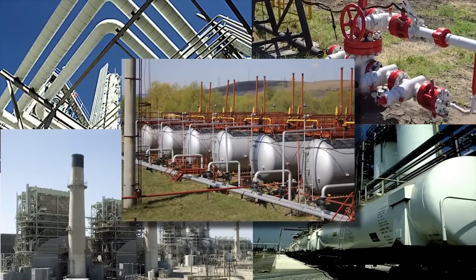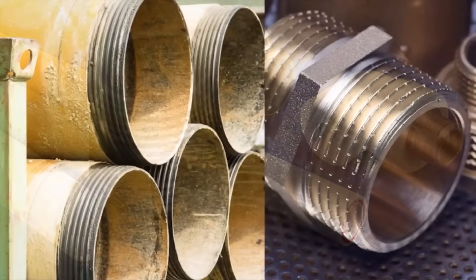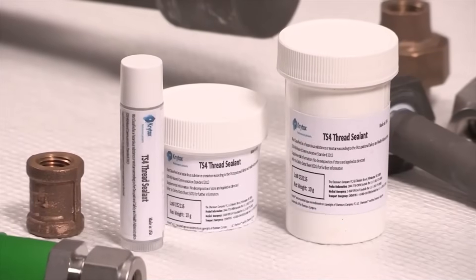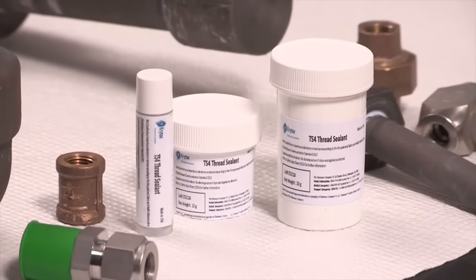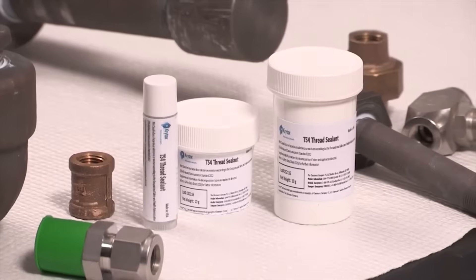Krytox TS-4 thread sealant, the solution for demanding applications, is designed for use on a variety of metal and plastic surfaces. It is available in half, tube, and eight-ounce tubes and half kg jars. Other package sizes are available upon request.